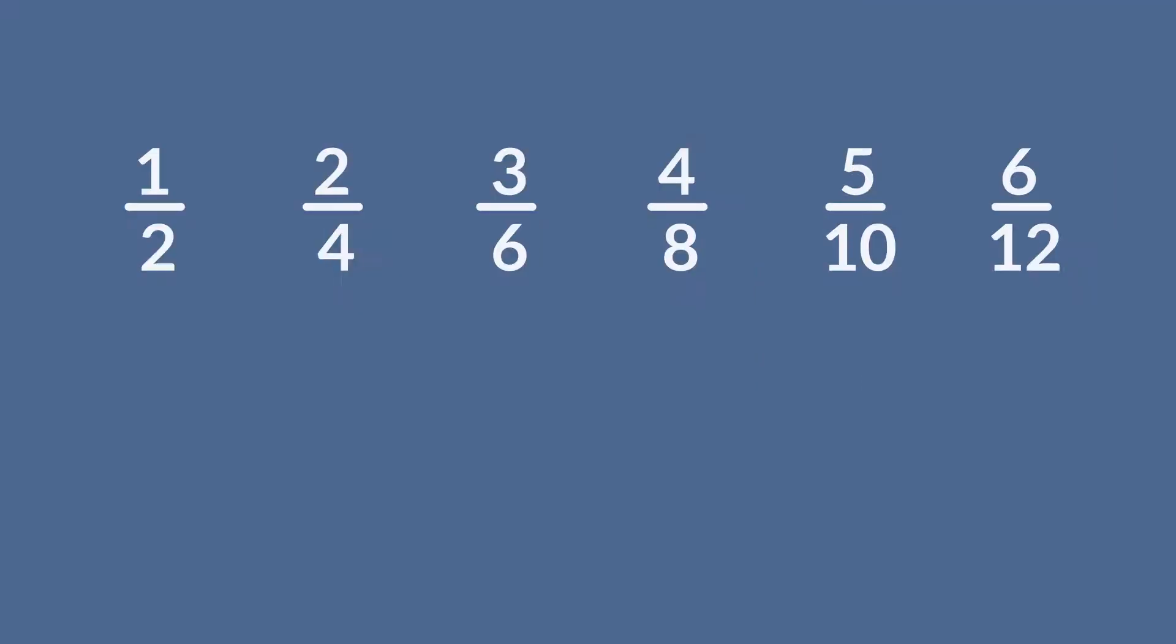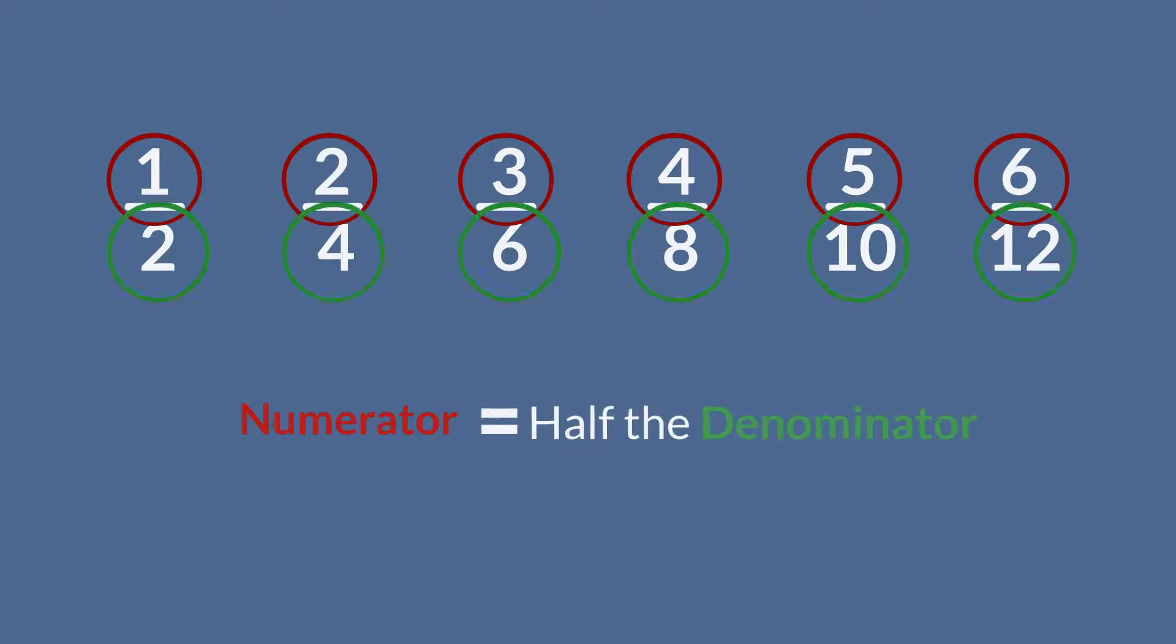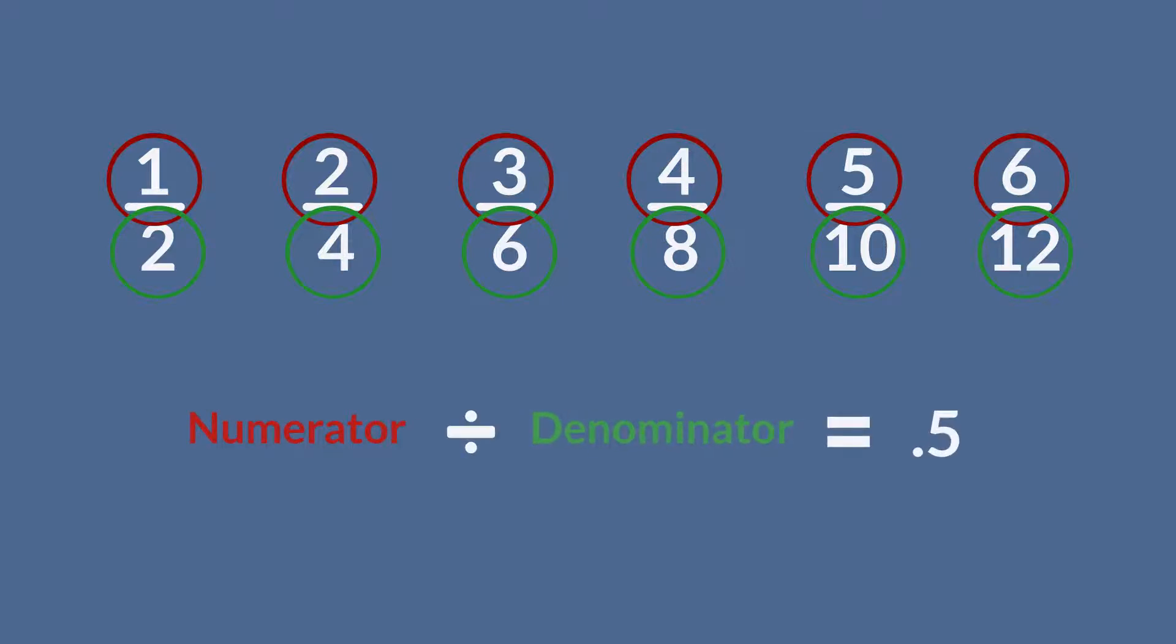In all these examples, the top number, or numerator, is half the bottom number, or denominator. In all these examples, the top number divided by the bottom number equals .5, or .50, or 50%.